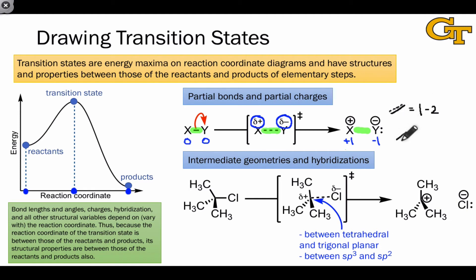For a bond order between 2 and 3, we can use two solid lines to indicate one sigma bond and one pi bond that are there throughout the elementary step, and one dotted line showing that the second pi bond is partially formed in the transition state. This indicates a bond order of 2 to 3.